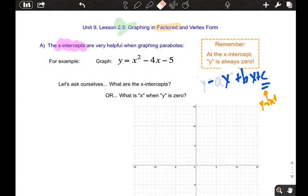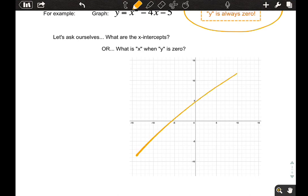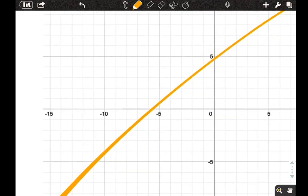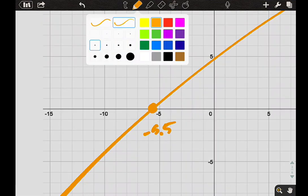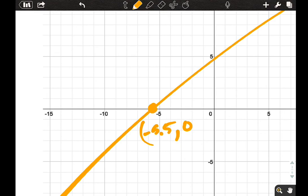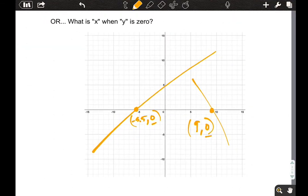We've got to ask ourselves, what do the x-intercepts mean? What does that entail? Well, you want to kind of go over here to this orange box, and it says, remember what we know about intercepts. At the x-intercept, y is always 0. We have a straight line at the x-intercept, maybe here, at negative 5.5. At negative 5.5, the y-value would have to be 0.